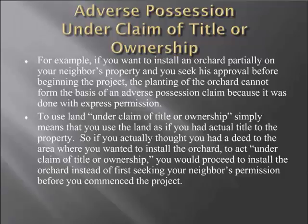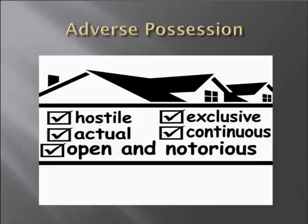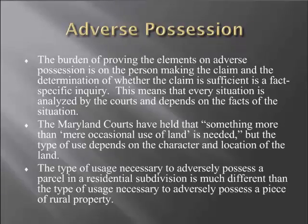To recap the elements: hostile means without permission; exclusive; actual; continuous; open and notorious. You have to go onto somebody's property, take it over, and use it in an open, continuous way for twenty years in order to have a claim for adverse possession. The burden of proving the elements is on the person making the claim, and the determination of whether the claim is sufficient is a fact-specific inquiry — every situation is analyzed by the courts depending on the facts. This legal standard has been pulled apart and analyzed by all levels of Maryland courts every year.